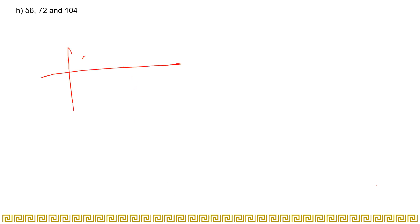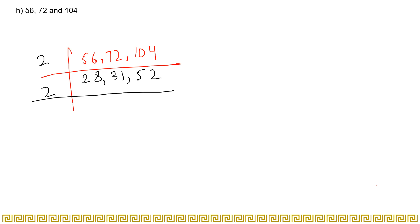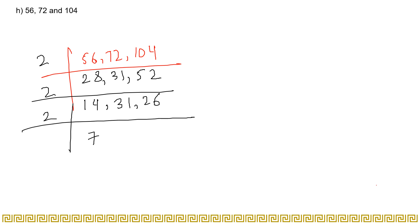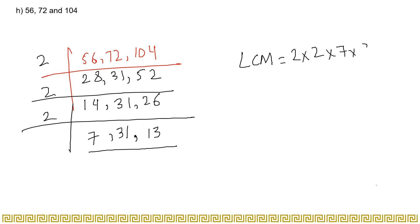Now for three numbers: 56, 72, and 104. These can be divided by 2, so we start with 2. Dividing repeatedly: 56÷2=28, 72÷2=36, 104÷2=52; then 14, 18, 26; then 7, 9, 13. Now 7, 31, and 13 are prime numbers, so we multiply directly: LCM = 2 × 2 × 2 × 7 × 31 × 13. Multiplying all of these gives you 65552.